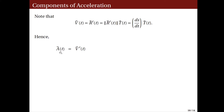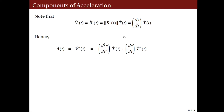Now we look at the acceleration vector function, which is the derivative of the velocity vector function. Since the velocity can be written as that product, we apply the product rule for derivatives. Applying the product rule — d left plus left d right — we have the unit tangent vector T times the second derivative of s with respect to t, plus ds over dt times the derivative of the unit tangent vector T prime of t.